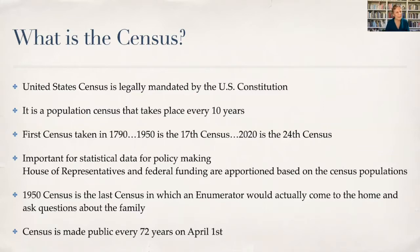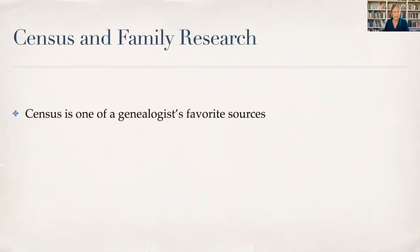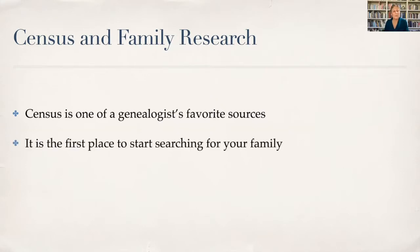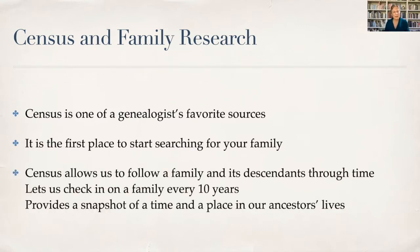In 1960, the census was mailed out and has been ever since. It's made public every 72 years on August 1st at 12:01. So why is it such a big deal for those of us that are family historians? Well, it is one of our favorite sources. It is the first place when we're just getting into genealogy to start searching for our family. The amazing thing about the census is it allows us to follow a family and its descendants through time — we can check in on our families every 10 years and see where they are, what they're doing, what children they have.